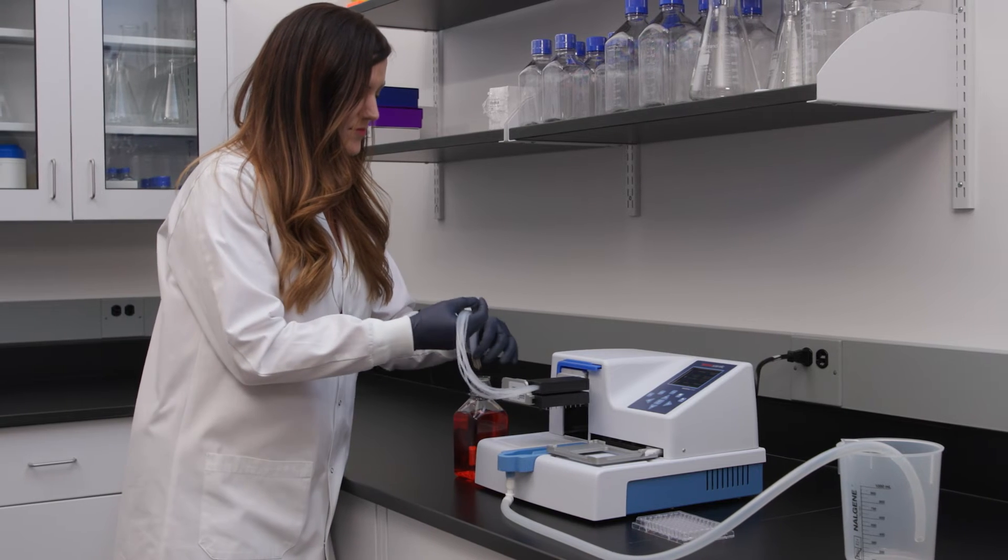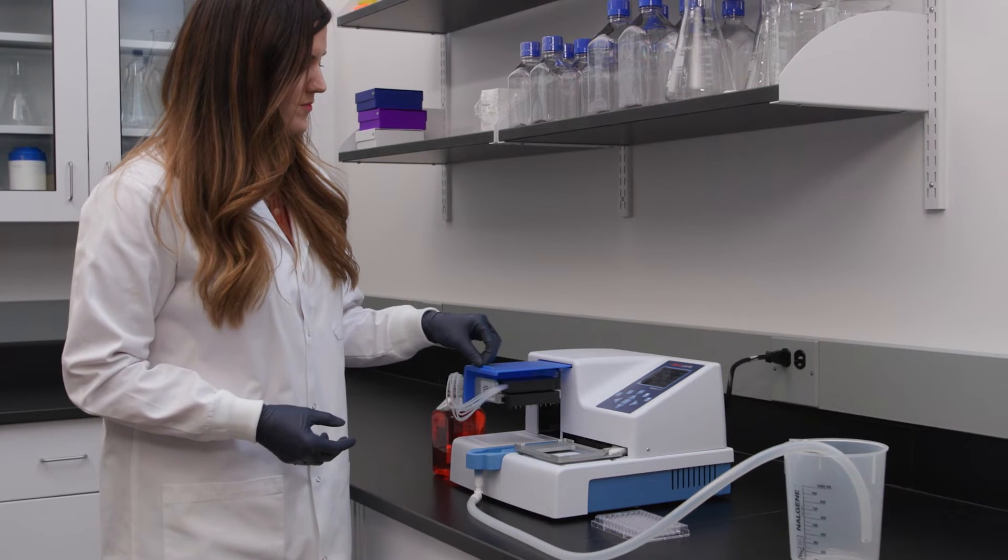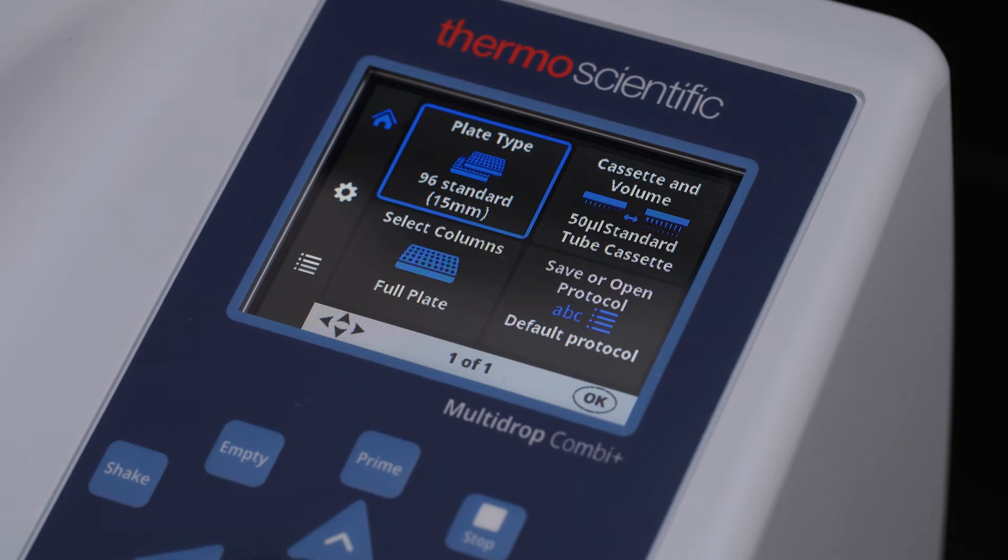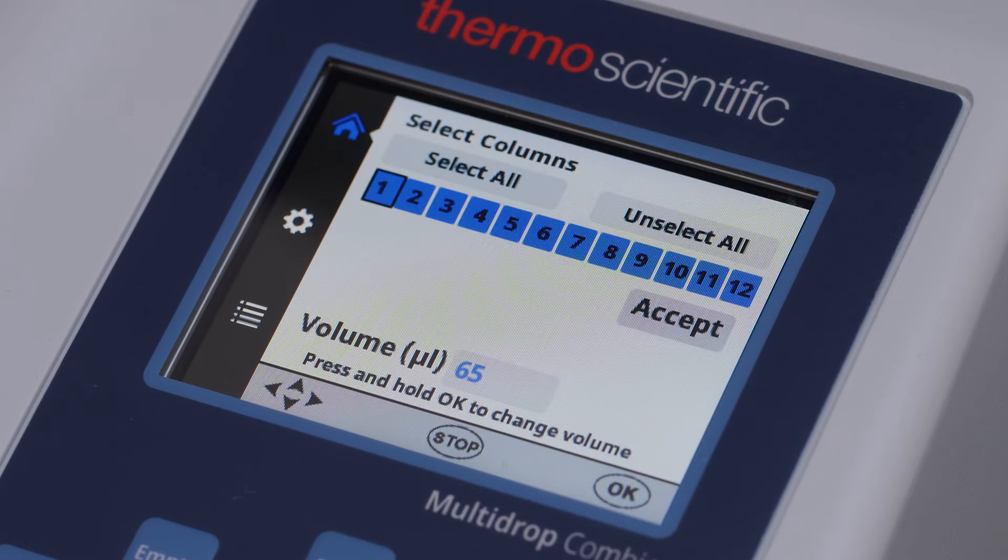With the cassette installed, you're ready to program the dispenser. From the main menu, select your dispensing parameters including plate type, cassette type, dispensing volume, and number of wells.